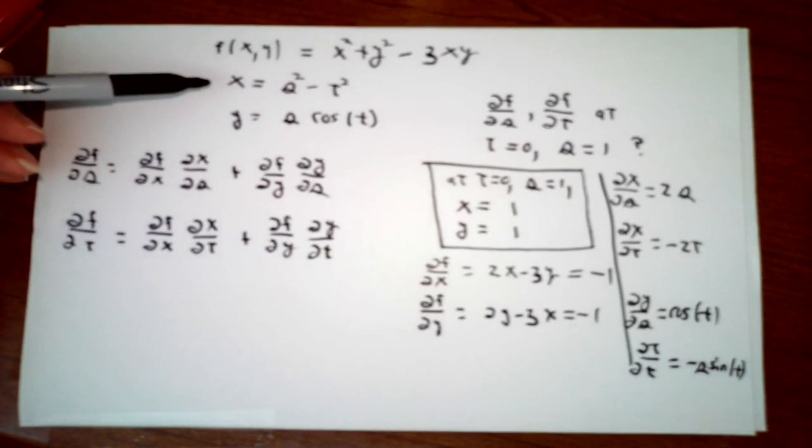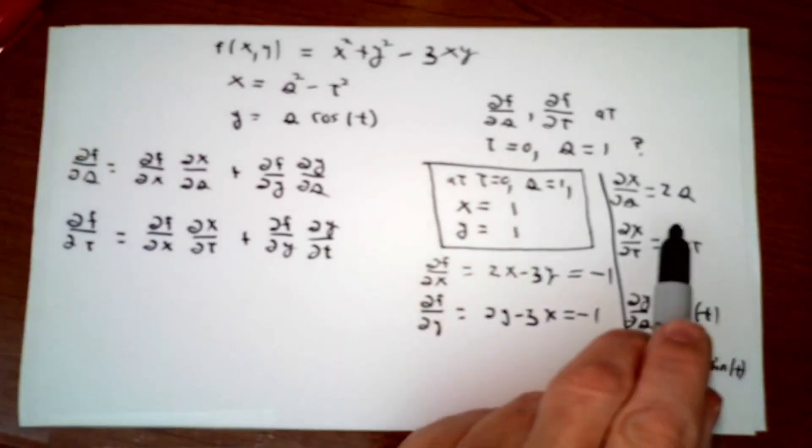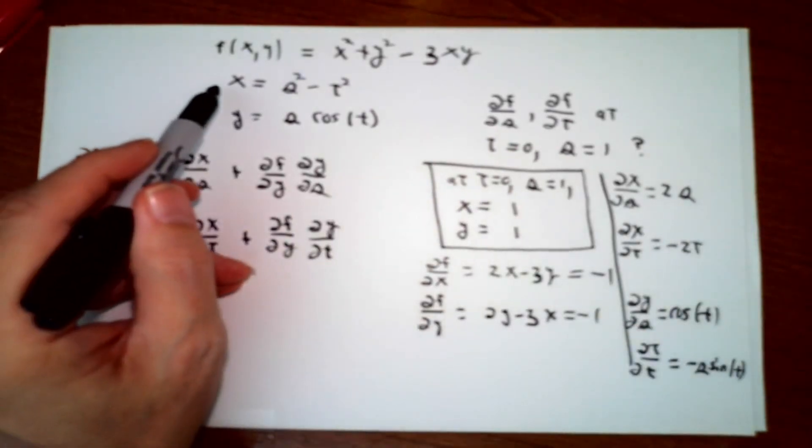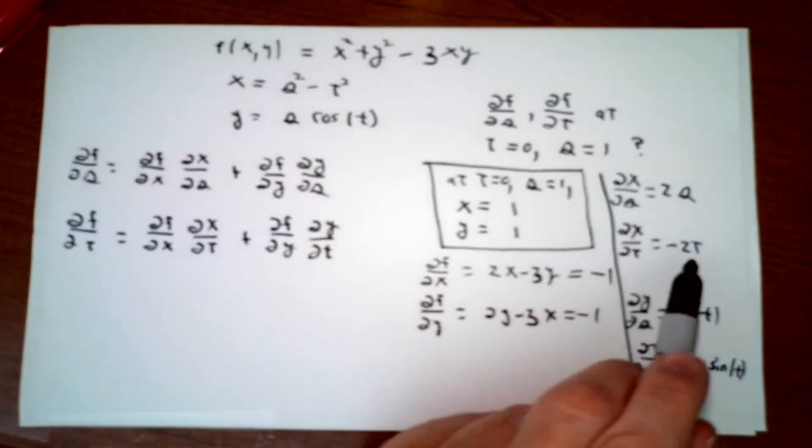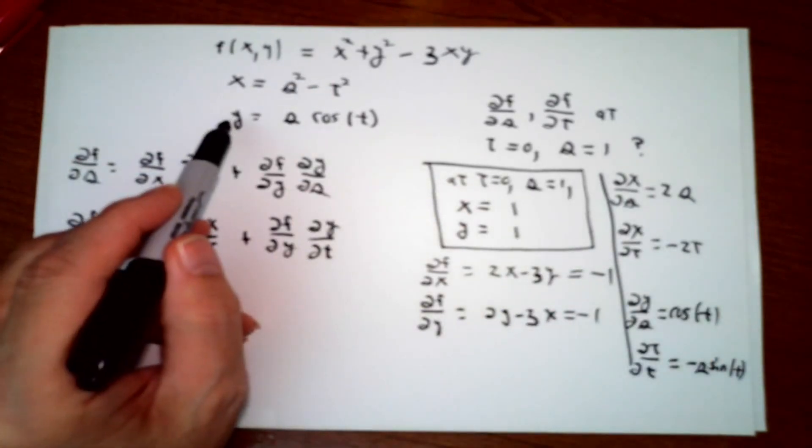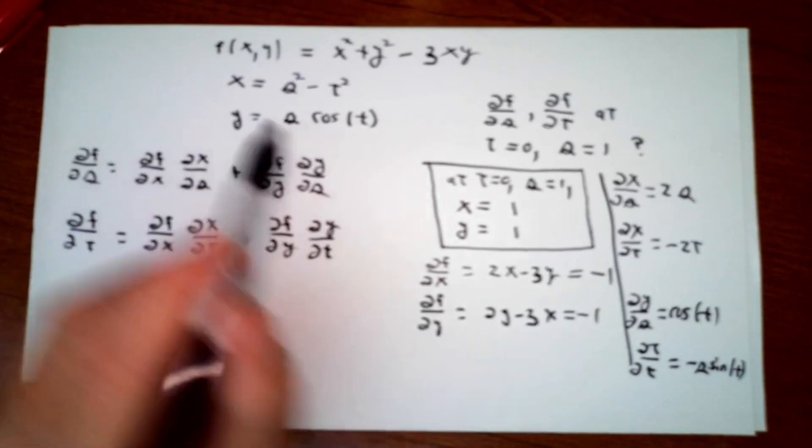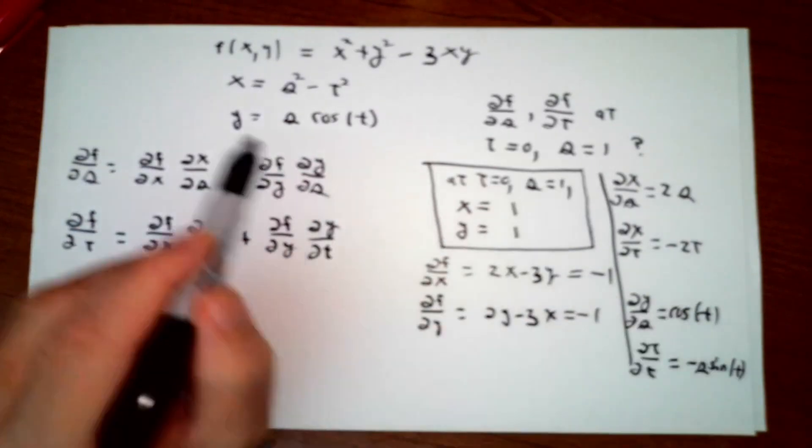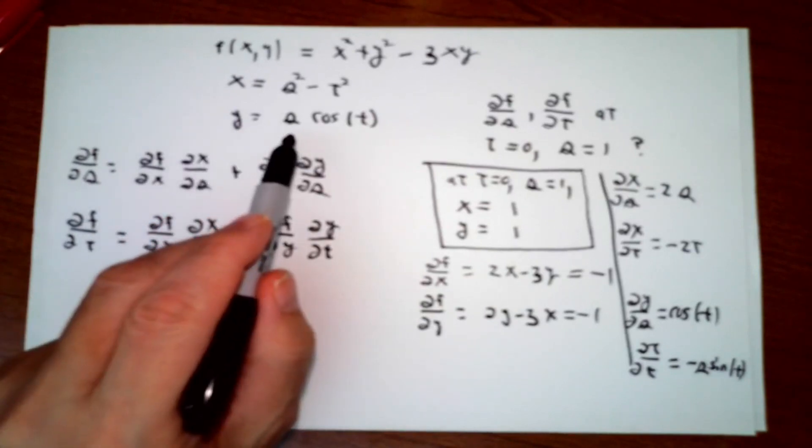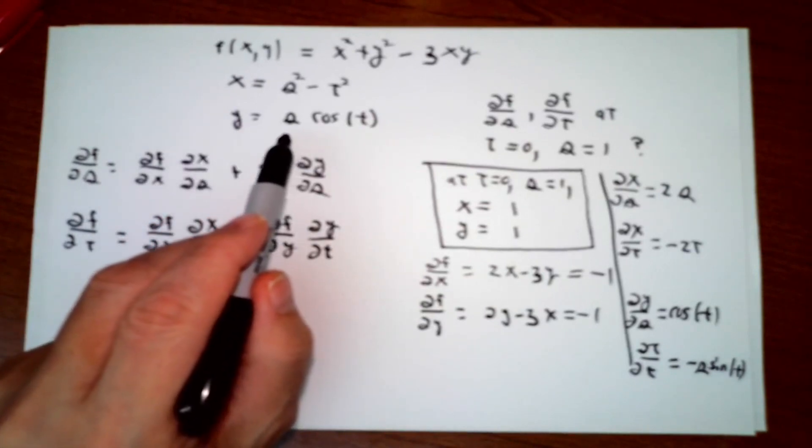Partial of x with respect to s is 2s. Partial of x with respect to t is negative 2t. Partial of y with respect to s is cosine t. And partial of y with respect to t is s times the negative of sine t, negative s sine t.